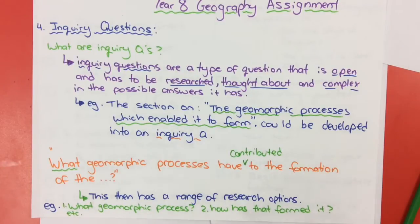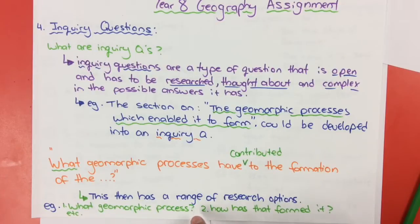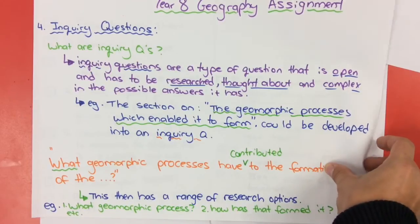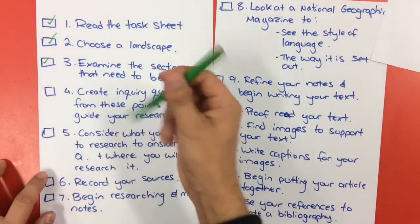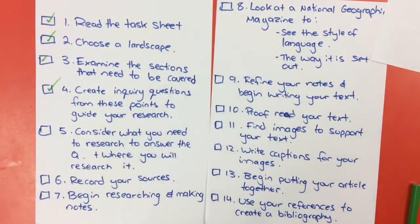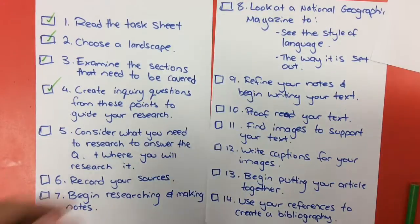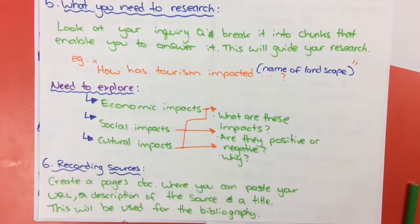We're going to talk about how to break down those inquiry questions so you know how to research them. I've done a really simple example here but I'll go into a detailed one later. You would research what geomorphic processes and how that has formed that landform or landscape. Consider what you need to research and where you're going to research. Looking at your inquiry questions that you've come up with, break them into chunks that enable you to answer it - that will help guide your research.